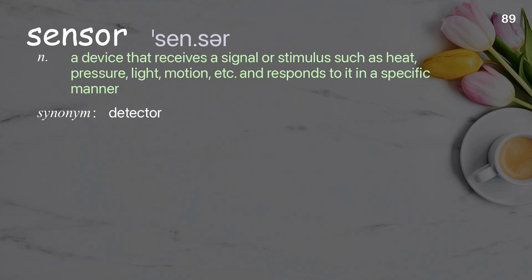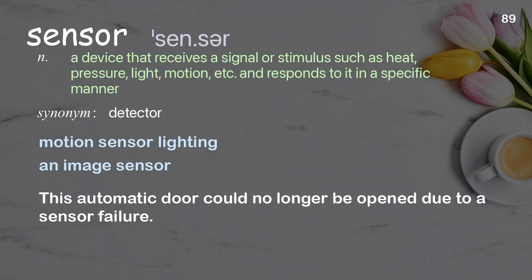Sensor: a device that receives a signal or stimulus such as heat, pressure, light, motion, etc., and responds to it in a specific manner. Examples: motion sensor lighting, an image sensor. This automatic door could no longer be opened due to a sensor failure.